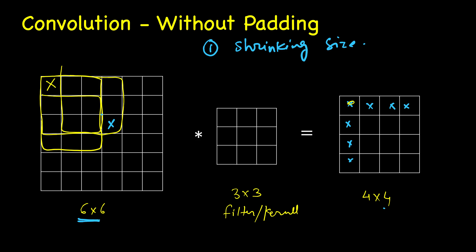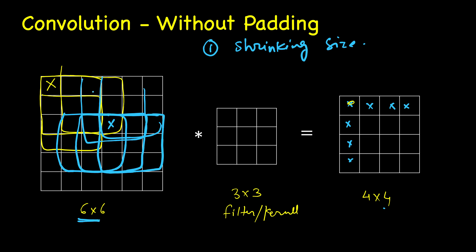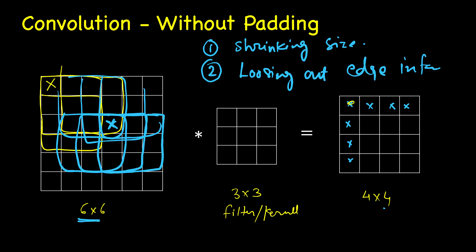If you look at a central pixel - say this blue one - it will be used multiple times. When the filter is here it's used once, then when the filter shifts it's used again, and you can see it's used three or more times across different filter positions. So central pixels contribute far more to the output than edge pixels, which is another form of information loss - we are losing out edge information.